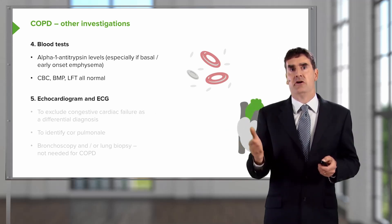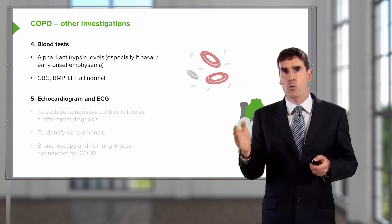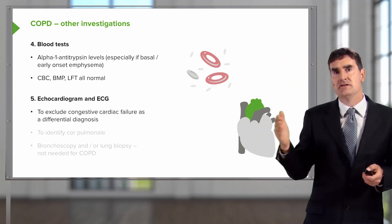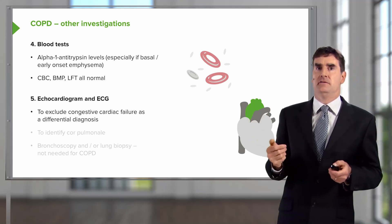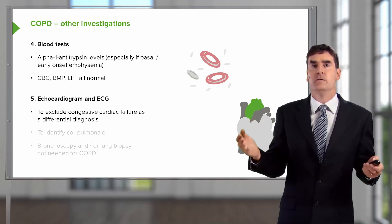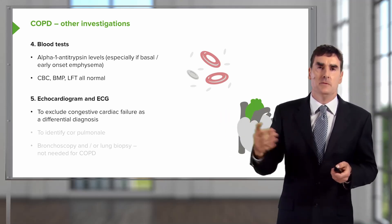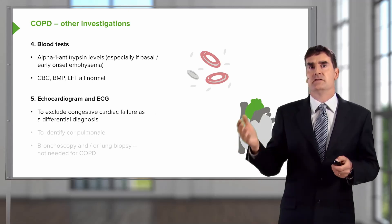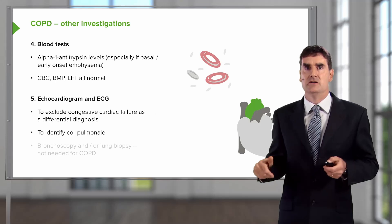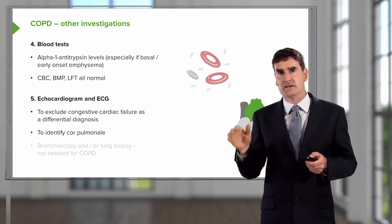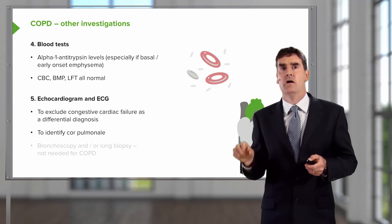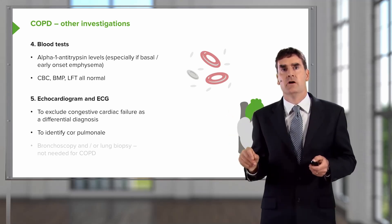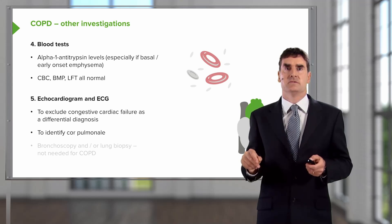Some patients need an echocardiogram and ECG, and there are two reasons for that. One, the main differential diagnosis for somebody with COPD would be cardiac breathlessness — congestive cardiac failure or a valvular problem such as aortic stenosis — and you may need to exclude that as a cause of their breathlessness. The other reason is that patients with chronic hypoxia may develop cor pulmonale, and you need an echocardiogram to measure the pulmonary hypertension that could be present in those circumstances.